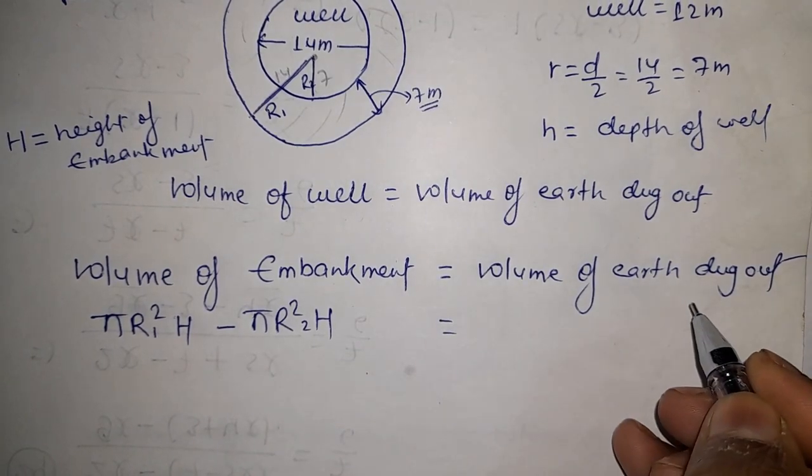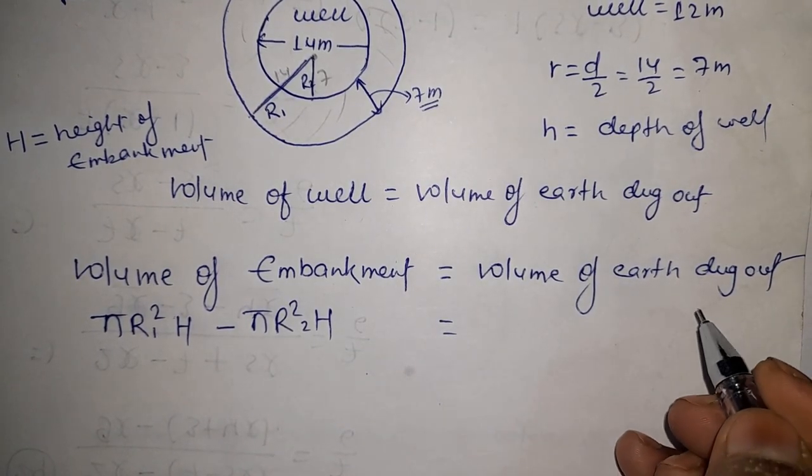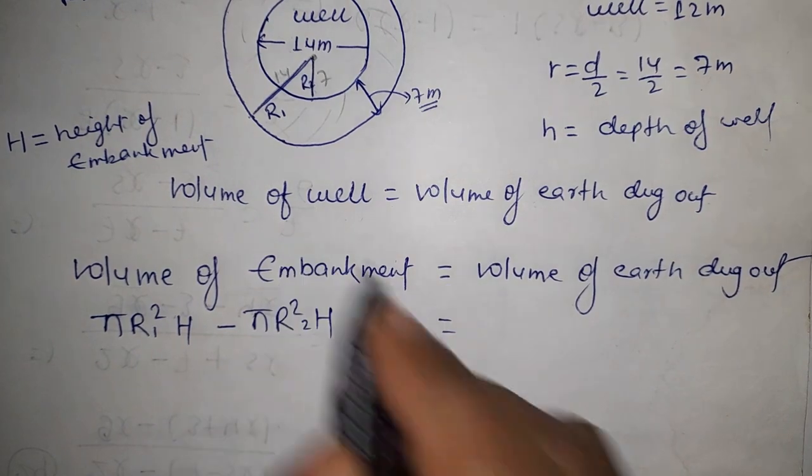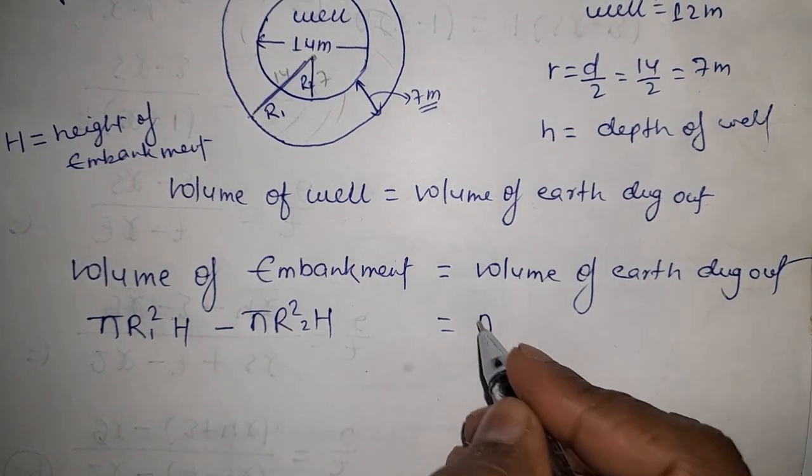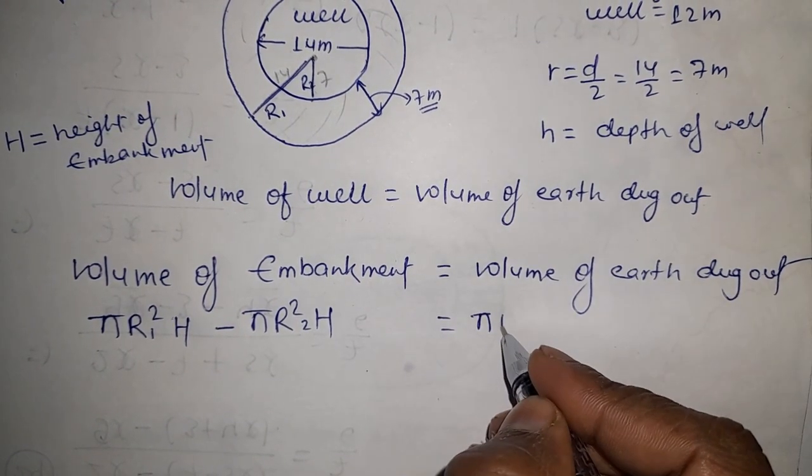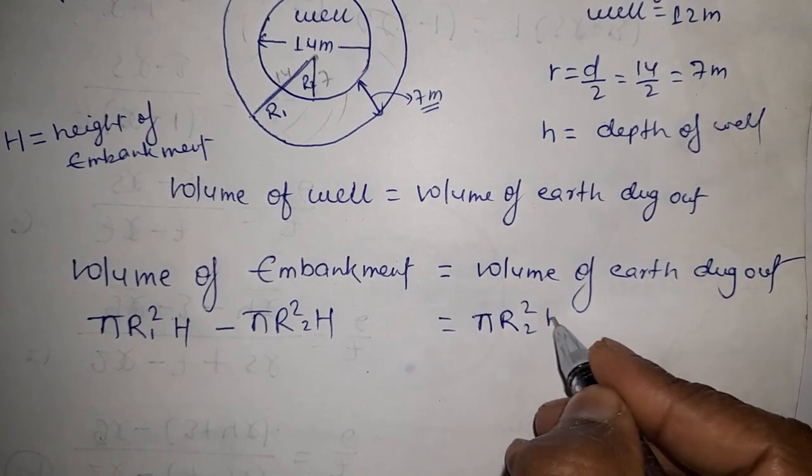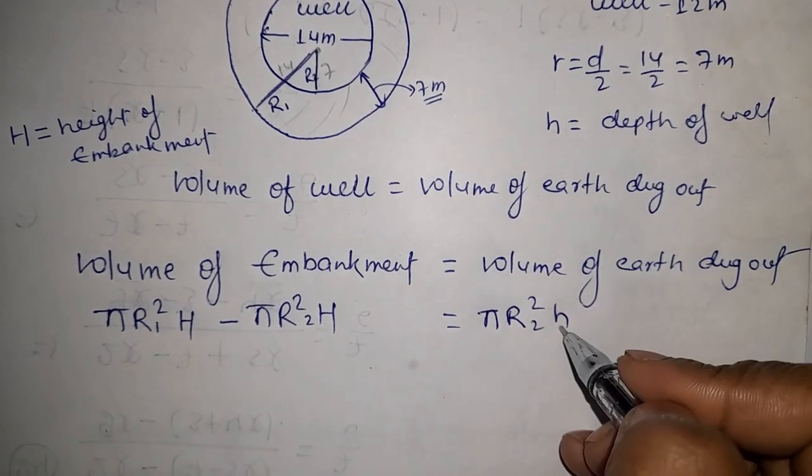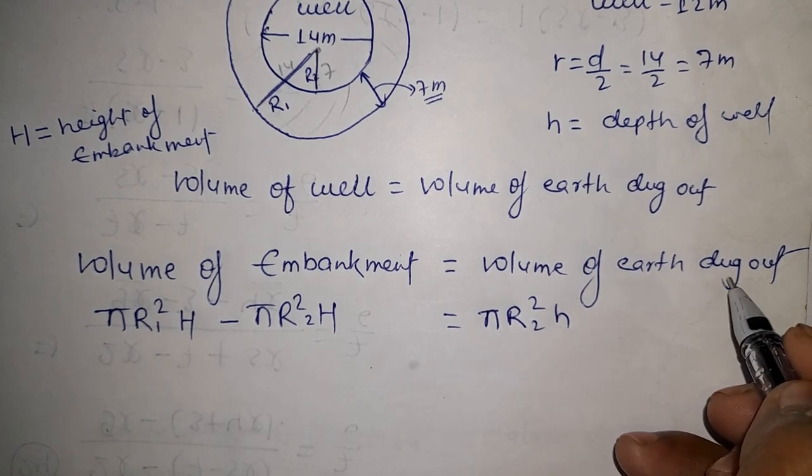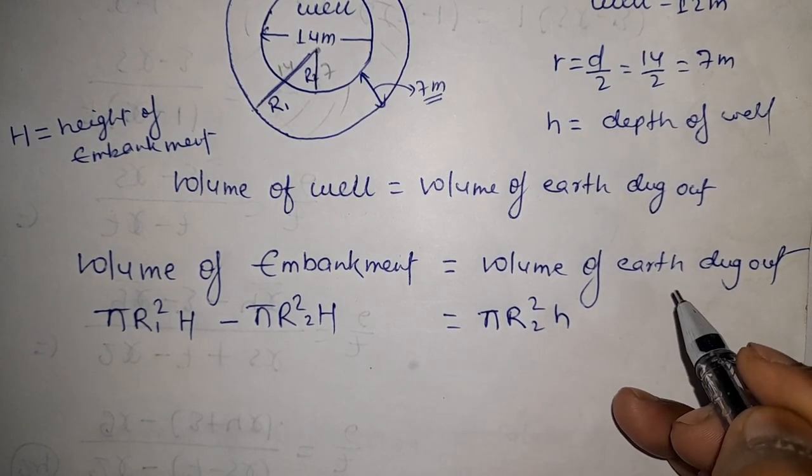Volume of earth means volume of well, which equals the well's volume - cylindrical shape: pi R2 squared h (small h) - depth of well.